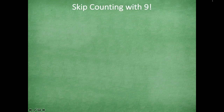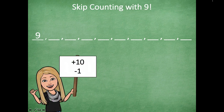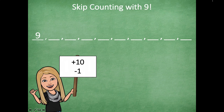Let's do some skip counting with nines — another cool strategy. So we've really learned three strategies already: looking at the ones place and tens place patterns, adding the two digits to get nine, and using one less for the tens place. Now we're going to skip count using a strategy called add ten minus one.